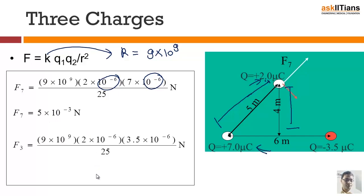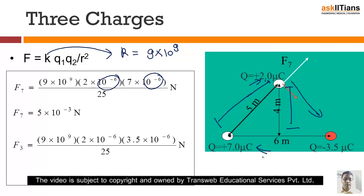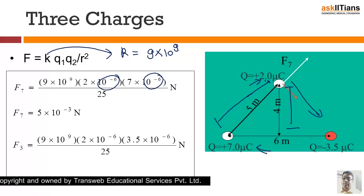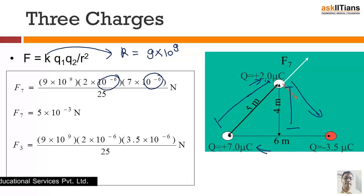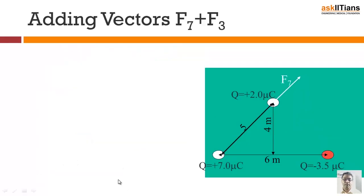In a similar manner, finding the net force between the other pair gives a force of attraction. Since this forms an equilateral triangle, everything else remains the same. The charge of 3.5 microcoulombs gives a force of approximately 2.5×10⁻³ newtons. Now we have to take care of the directions.